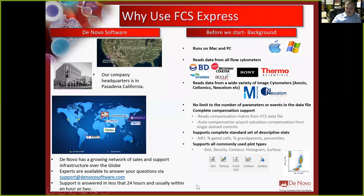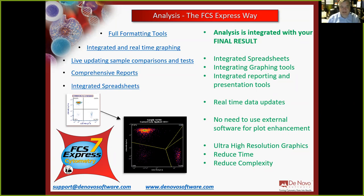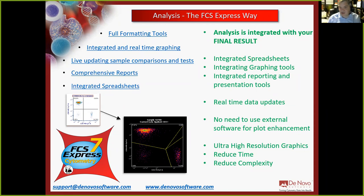The analysis is always integrated with your final result. For an antibody titration, the end goal is figuring out the amount of antibody to use, or generating a titration curve. In other software you'd copy and paste data out to Excel and Prism to arrive at that result — but in FCS Express everything is integrated through spreadsheets. As you move gates everything updates in real time, reducing time and complexity.